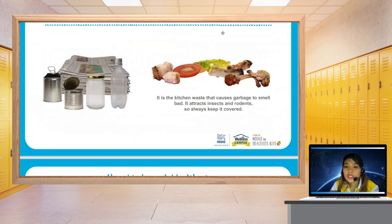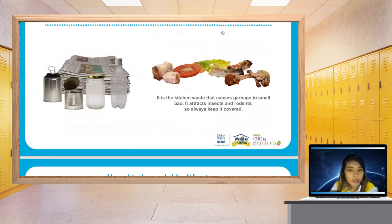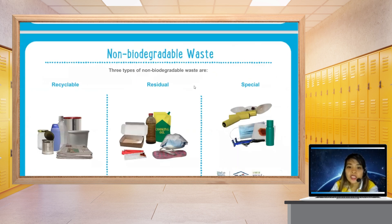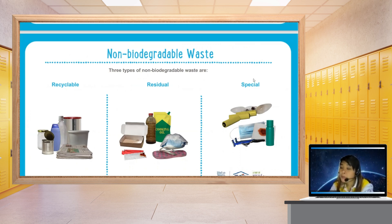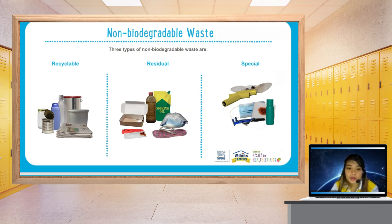It is the kitchen waste that causes garbage to smell foul and attracts insects and rodents, so always keep it covered. There are three types of non-biodegradable waste: recyclable, residual, and special. As you can see here, examples of recyclable waste include plastic, paper, and cans.